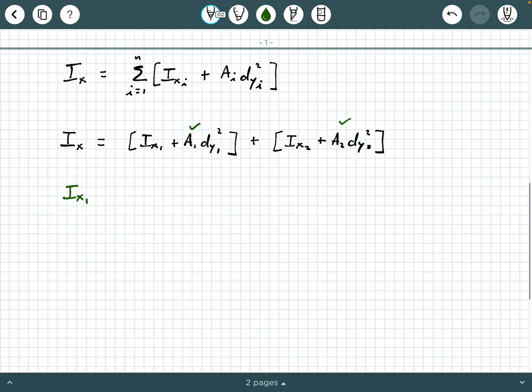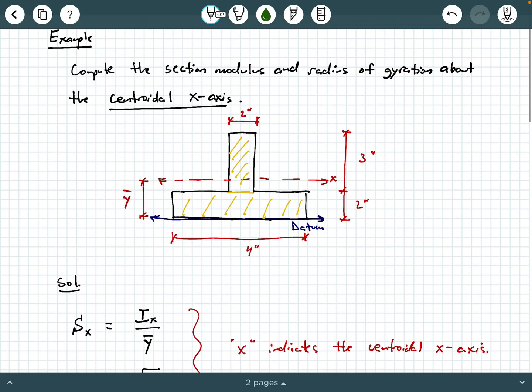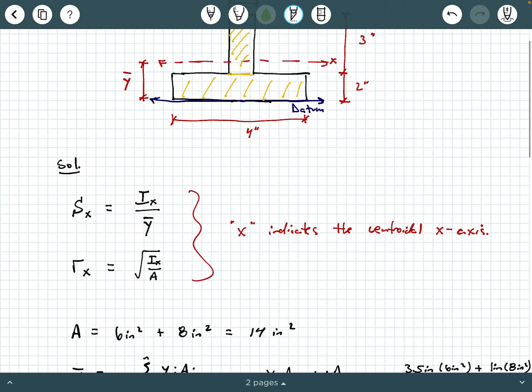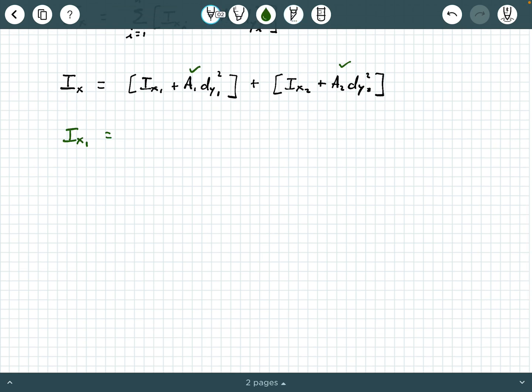Let's get I sub X 1 first. Well, if we look at this rectangular piece right here, remember for a rectangle, what's the moment of inertia about its own centroidal axis? B times H cubed over 12. So that'll give us 2 inches times 3 inches cubed over 12. And when you punch this through, I get 4.5 inches to the fourth. So there we go. We have I X sub 1. The next thing we can go and get since we're working on part number 1 right now is D sub Y 1.